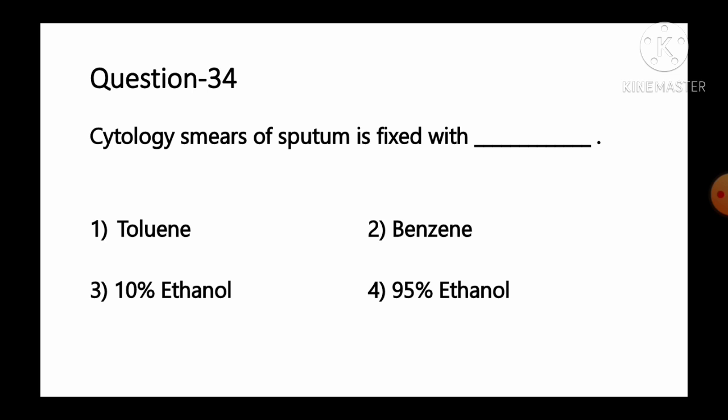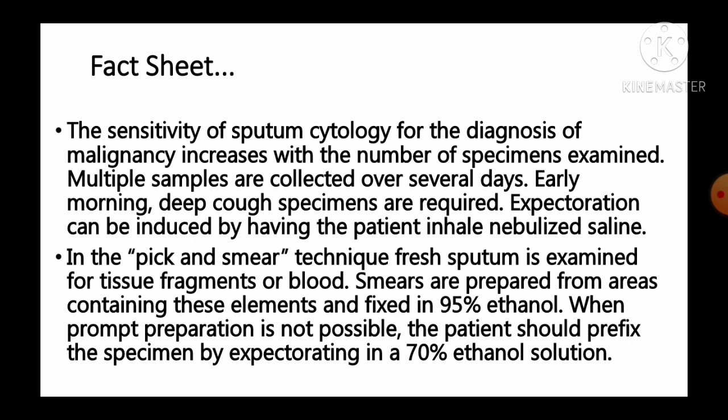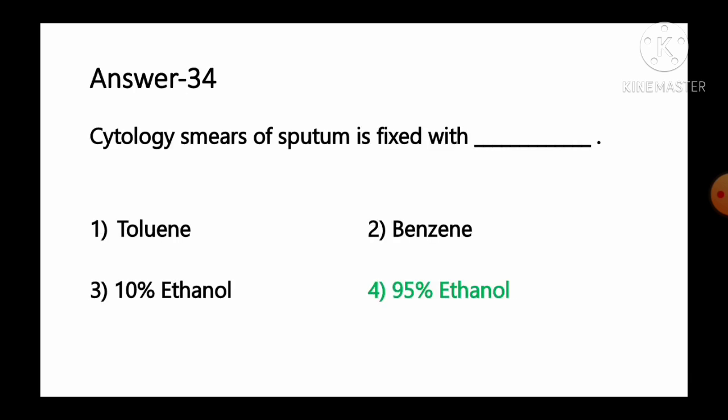Question number 34: Cytology smear for sputum is fixed with — option 1 toluene, option 2 benzene, option 3 10% ethanol, option 4 95% ethanol. In the pick-and-smear technique, fresh sputum is examined for tissue fragments; smears are prepared and fixed in 95% ethanol. When prompt preparation is not possible, the patient should pre-fix the specimen by expectorating in a 70% ethanol solution. So option number 4, 95% ethanol, is the correct answer.